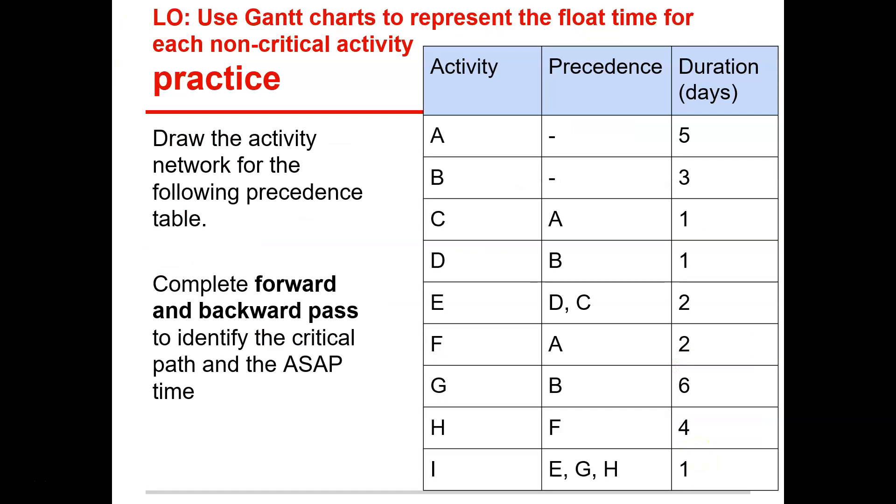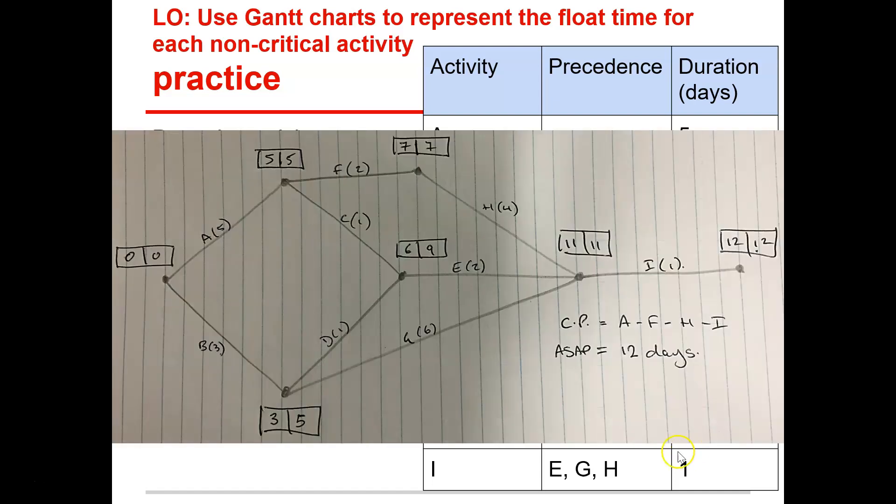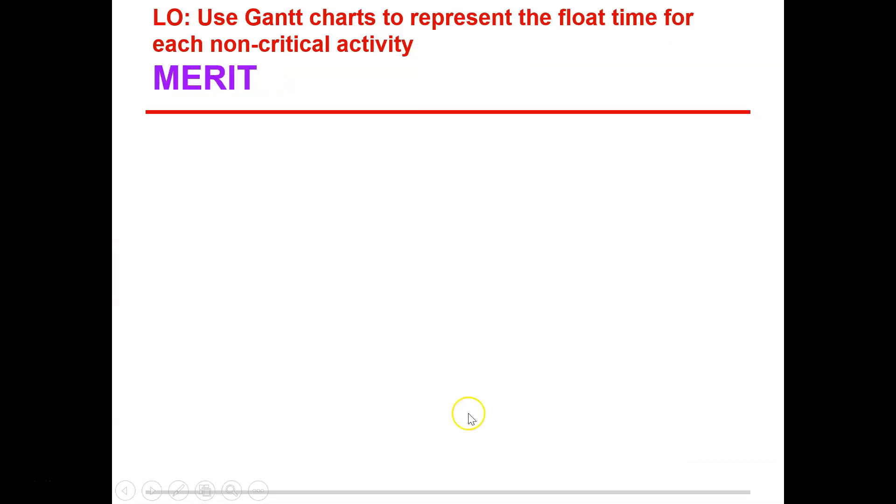Alright, and here's going to be another example. Have a go at this one. Pause the video. Have a go. Come back to the solution, which is this. And your network should look similar to this with your forwards and backwards giving you this and giving you the critical path of A, F, H and I with the ASAP time of 12 days. Again, if this critical path was any of these activities were delayed, the whole project would be delayed. Alright, this will be next video.